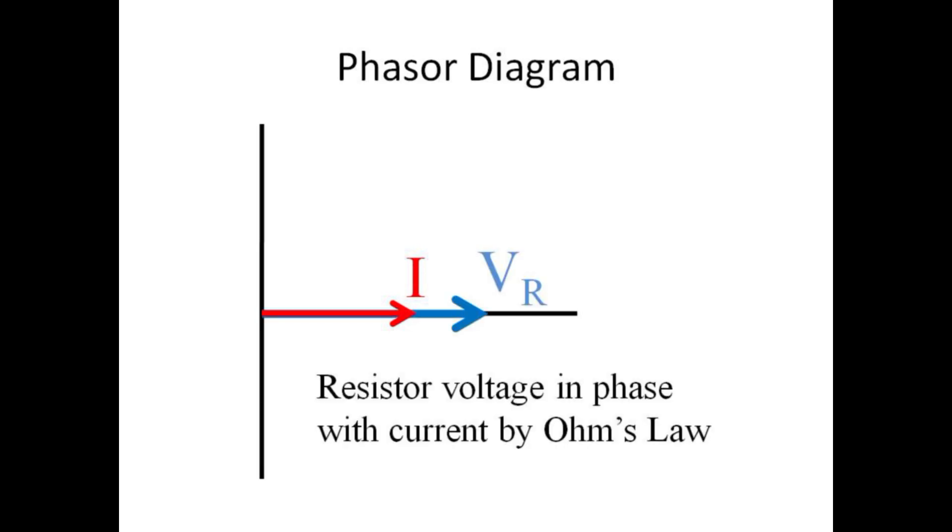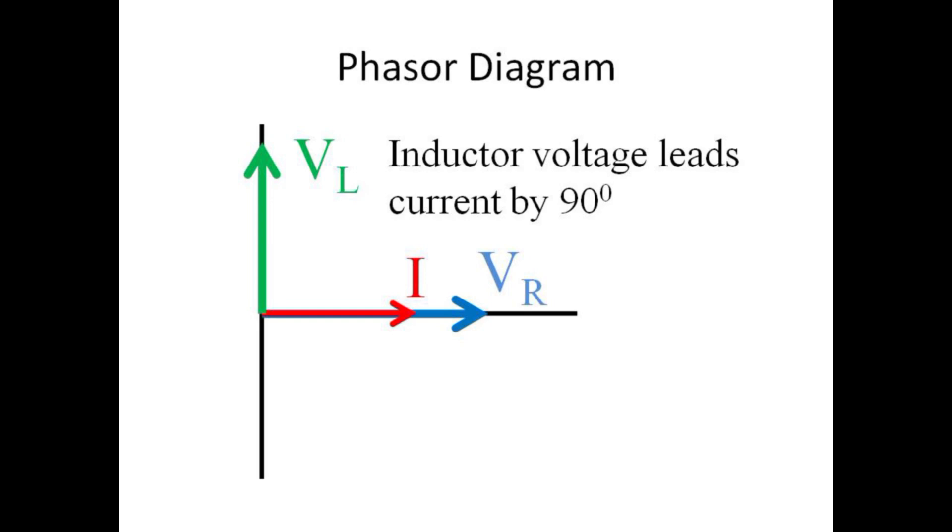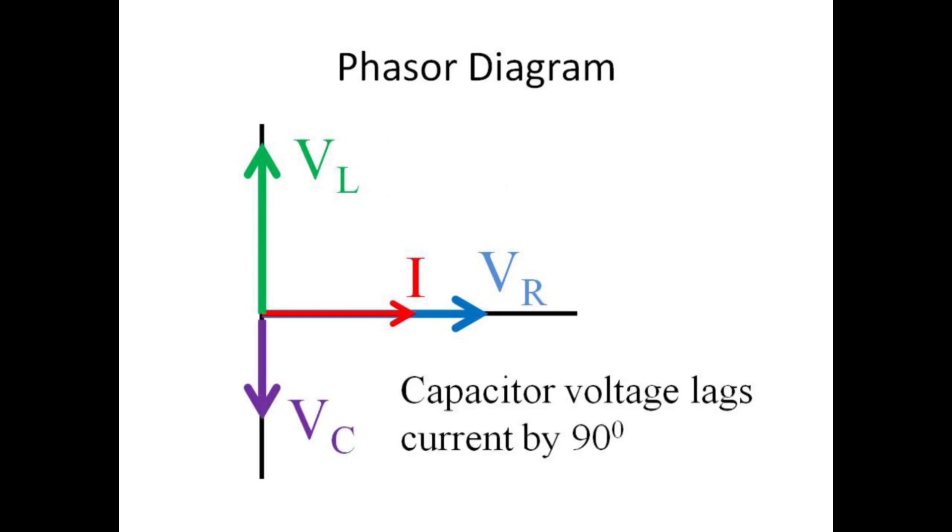The resistor voltage is precisely in phase with current by Ohm's law and will be drawn as a phasor also aligned with the x-axis, but scaled by V equals IR. The inductor voltage leads the current by 90 degrees and is thus drawn vertically upward on the phasor diagram. Since the capacitor voltage lags the current by 90 degrees, its phasor is drawn vertically downward.